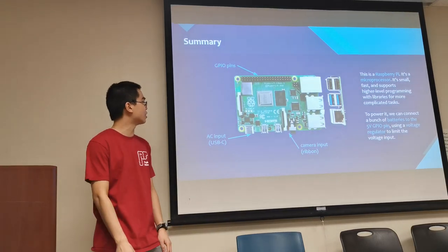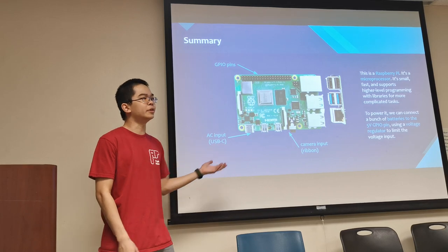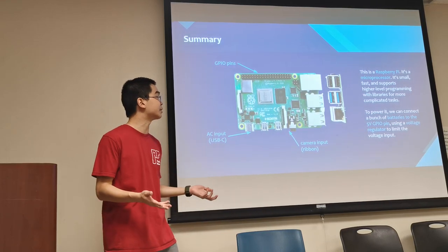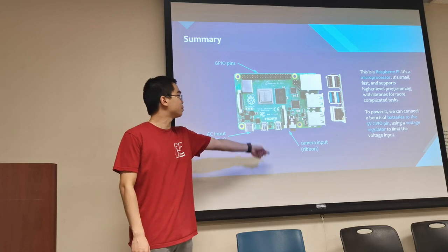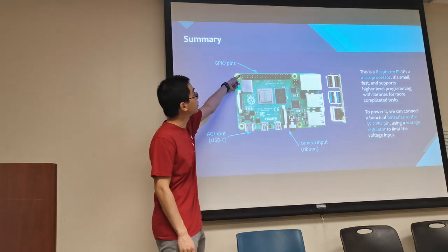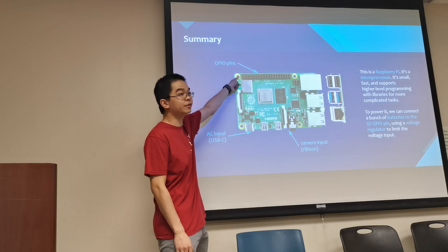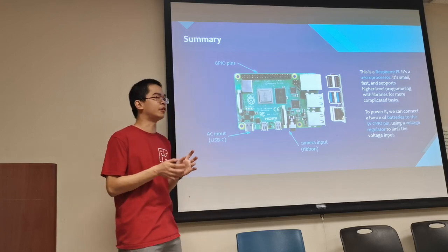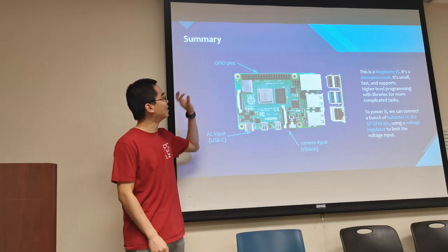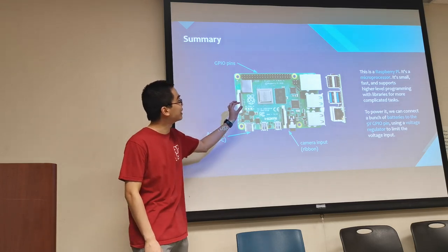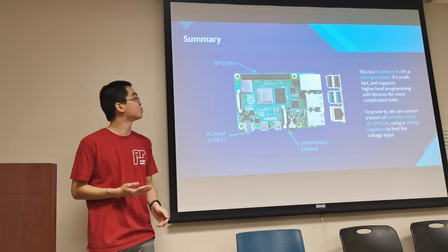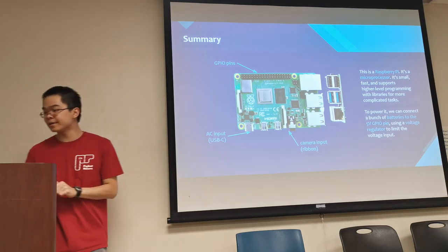In summary, AC input is one of the easiest ways to power your Pi — just plug it into the wall. When you use your battery, you plug the 5 volt output from your battery into the 5 volt power supply pin on the Pi. And that's pretty much it about the Pi.